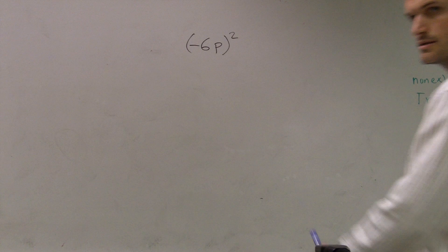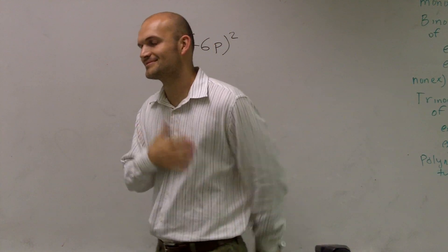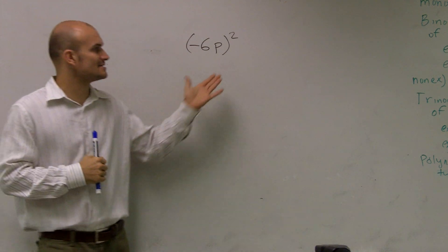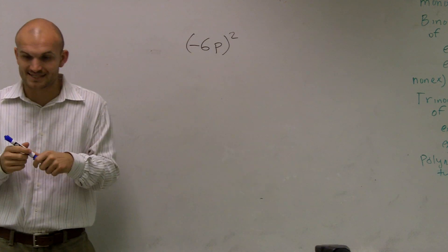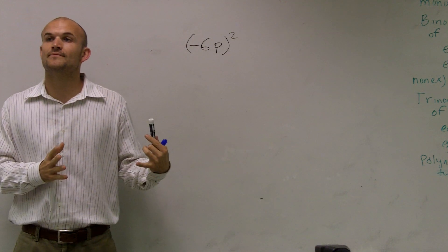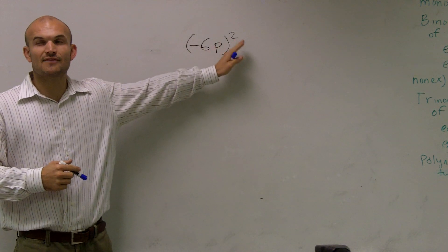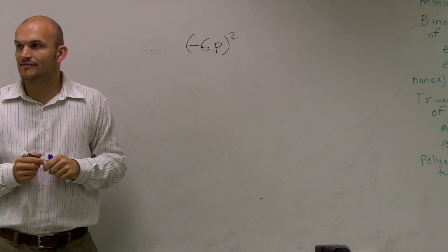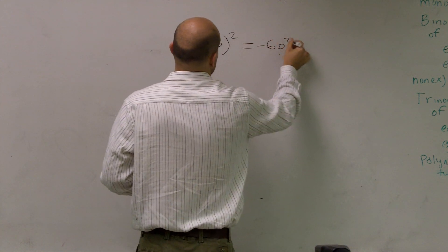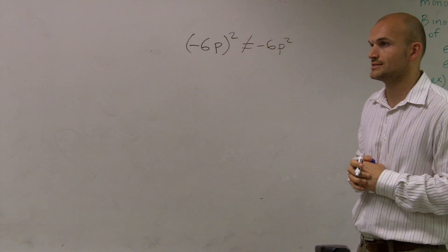Negative 6 p squared — what this is, guys, is a monomial multiplied by itself. A couple things we need to remember about this, because a lot of students make this initial error. They kind of forget about the parentheses and give an answer of negative 6 p squared, which is a wrong answer. Let me show you why this is not going to be correct.